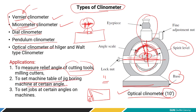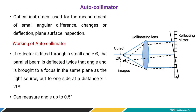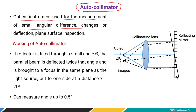The clinometer is also used to set a job at a certain angle on machines. The autocollimator is another angular measuring device. It works on the principle of ray/light reflections, so it is an optical instrument used for measurement of small angular differences — used to measure small angular differences, changes, deflections, or for plane surface inspection.